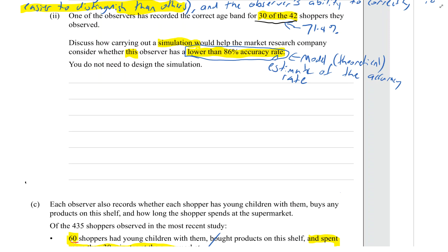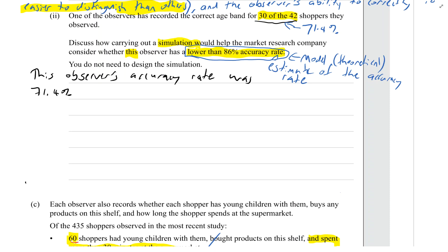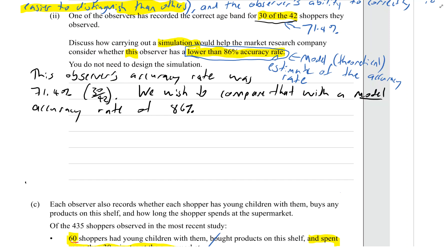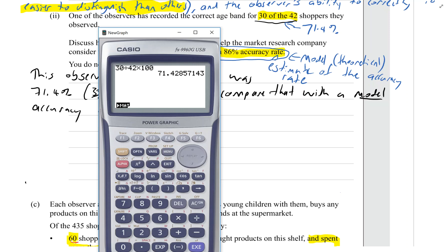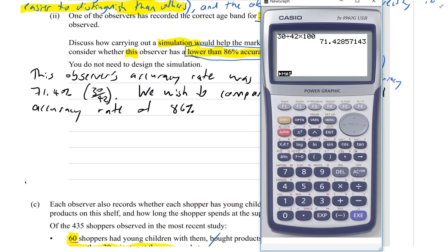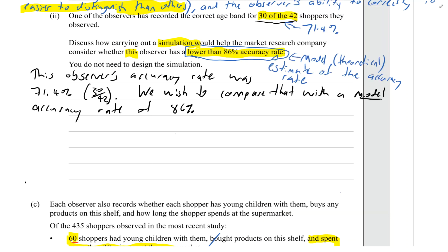So let's start by writing down what we know. This observer's accuracy rate was 71.4%, or 30 out of 42. We wish to compare that with a model accuracy rate of 86%. Now what would 86% be out of 42? It's going to be 86 divided by 100 times 42, which is about 36 — so about 36 out of 42 correct.